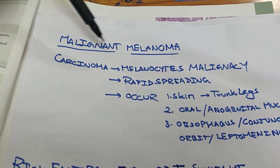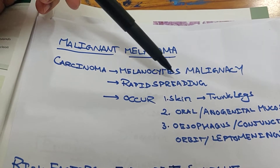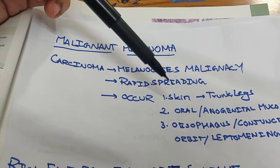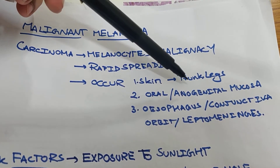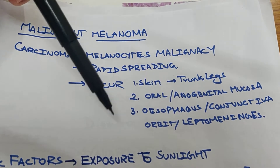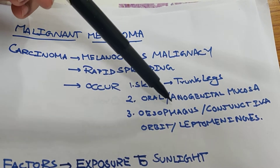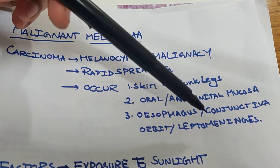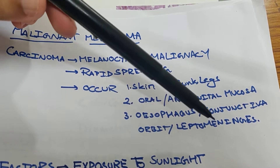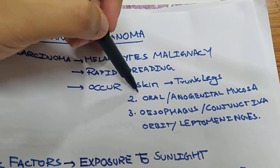This video covers malignant melanoma, which is a carcinoma involving the melanocytes. It is rapidly spreading and mainly occurs at the skin — specifically the trunk and legs. It can also be found at the oral and anogenital mucosa, esophagus, conjunctiva, orbits of the eye, and leptomeninges, but mainly it occurs at the skin.